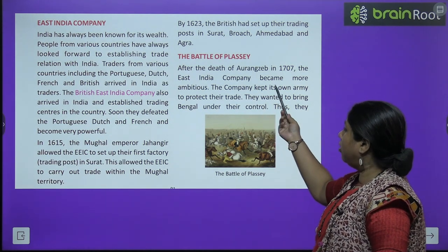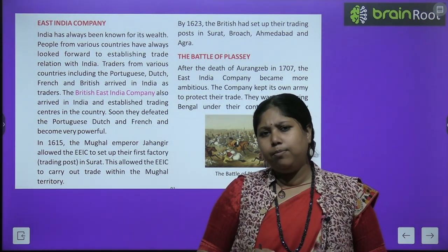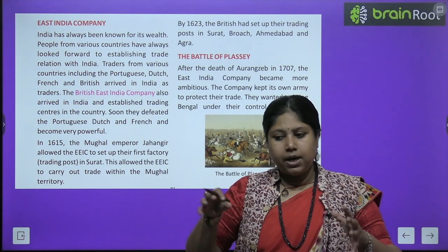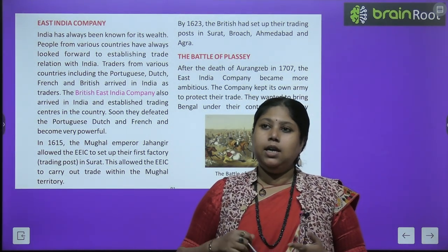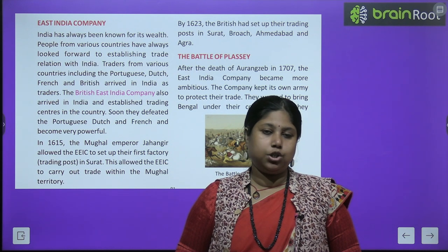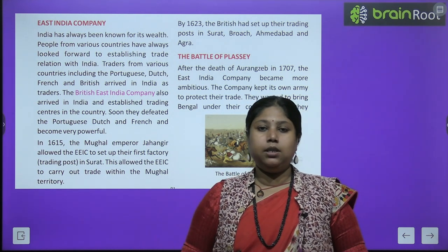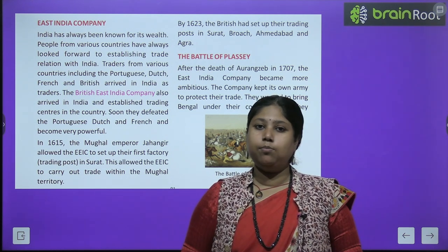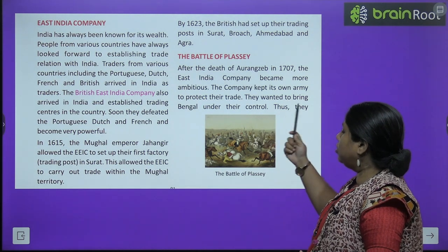The Battle of Plassey: After the death of Aurangzeb in 1707, the East India Company became ambitious. After Aurangzeb, the Mughal Empire's grip was weakening, and there was no powerful emperor. The small kingdoms — Punjab, Maharashtra, Hyderabad — were busy competing among themselves, trying to show each other who was more powerful. The people of Bengal, the Punjab province, the Marathas — all were satisfied within their own territories and were not united. The British took great advantage of this disunity. The Company kept its own army to protect their trade and wanted to bring Bengal — the richest province at the time — under their control.